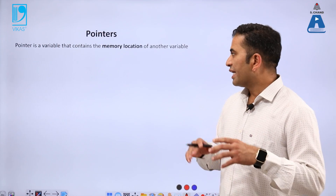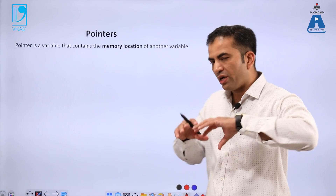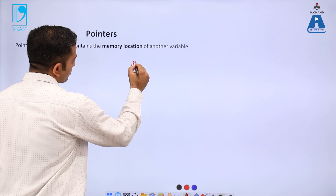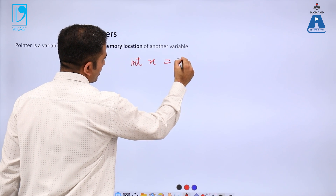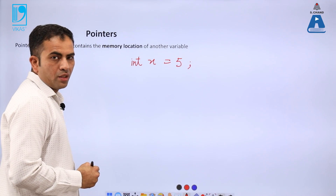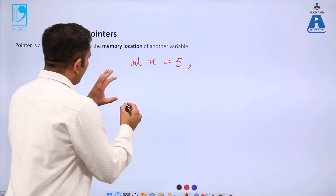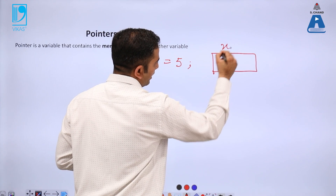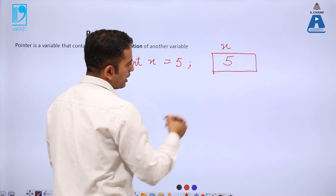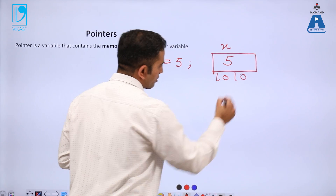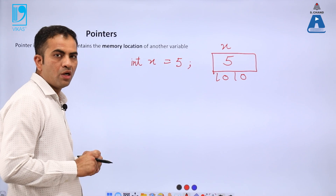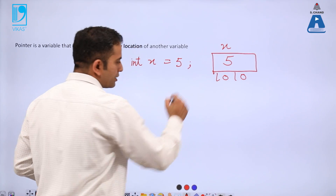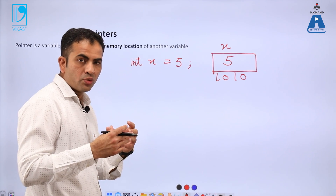A pointer is a variable that contains the memory location of another variable as a value. For example, if I say int x = 5, in memory we have a pictorial representation: x has value 5 and a random address 1010. Now I need to save that memory location in another variable, which we can do with the help of pointers.